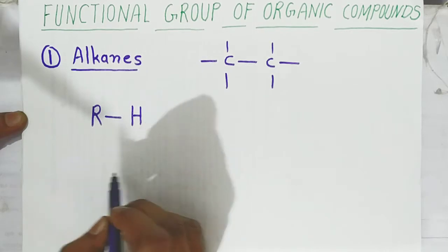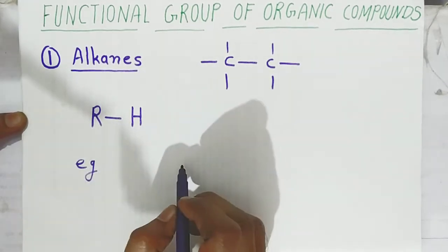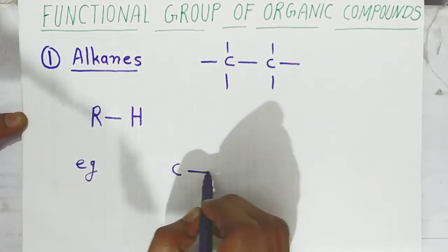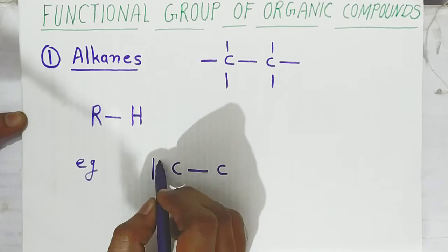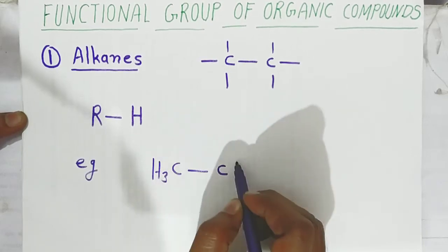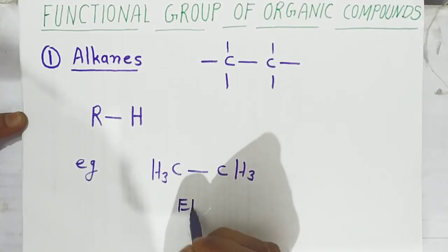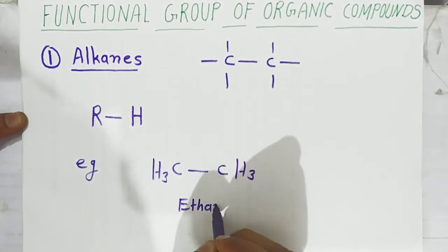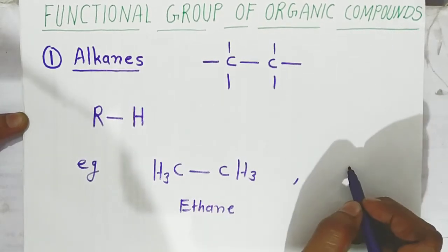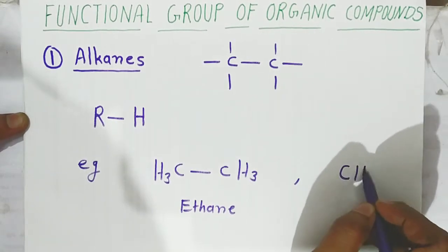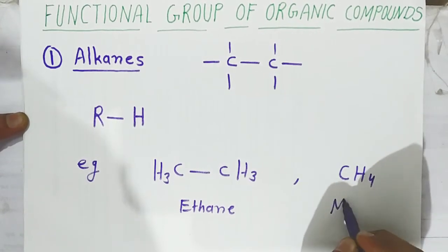For example, when you see ethane, carbon and carbon are connected with a single bond and the other valencies are occupied by hydrogen. This is ethane. Another example is CH4, which is methane.